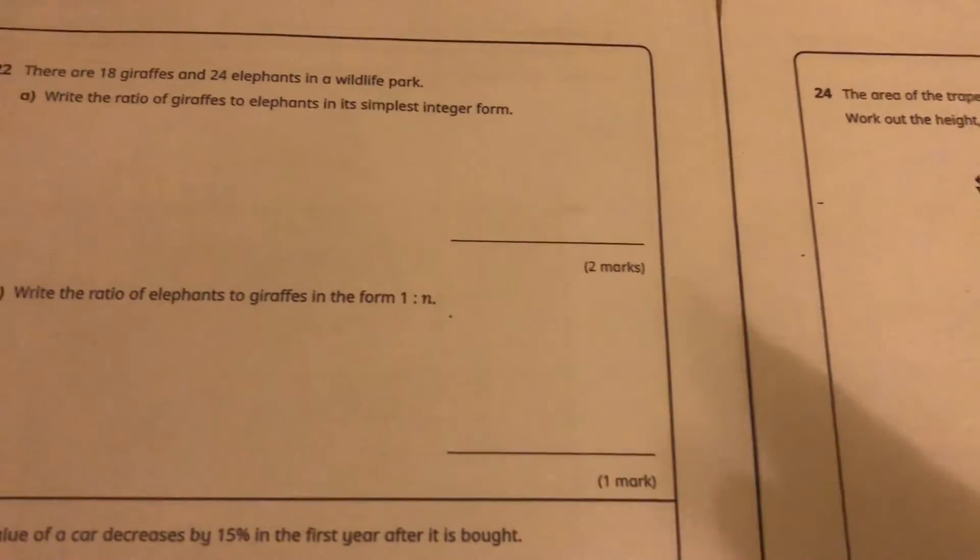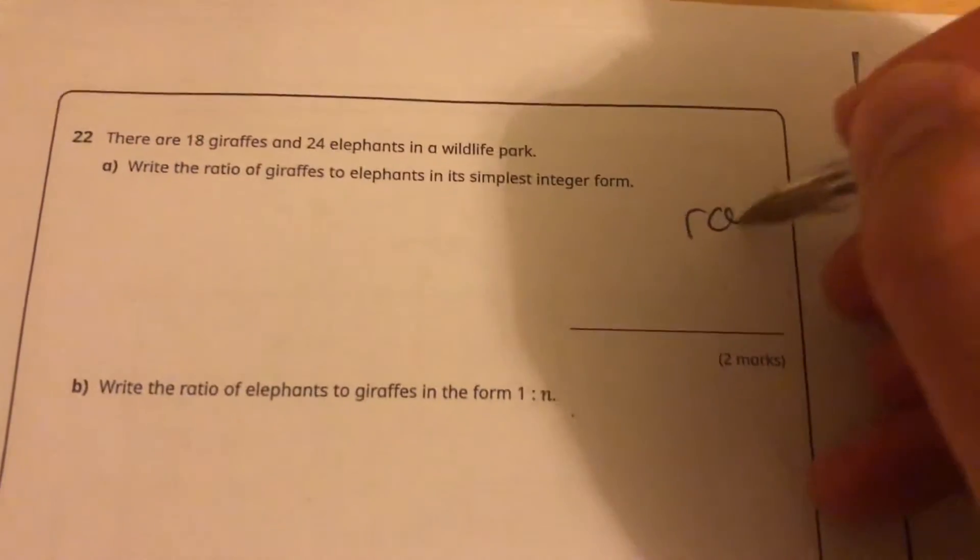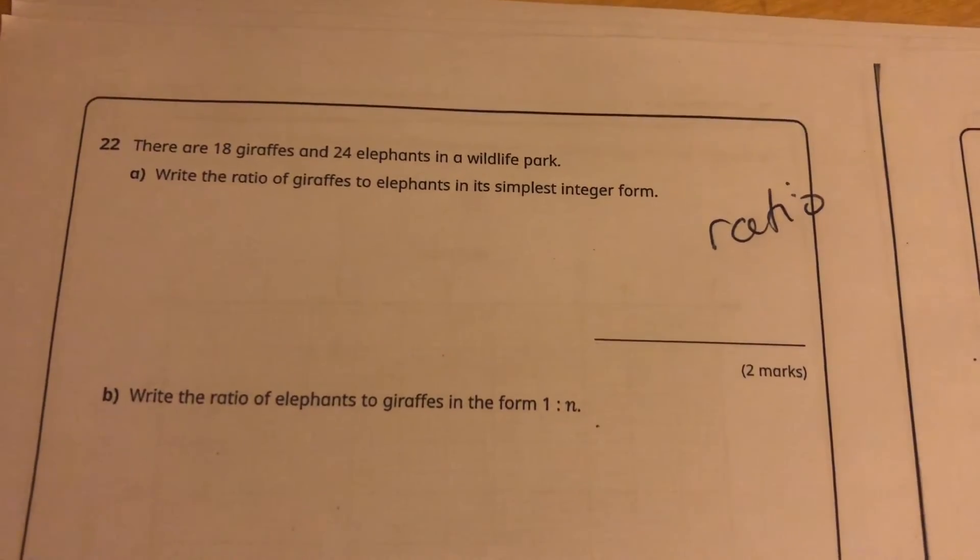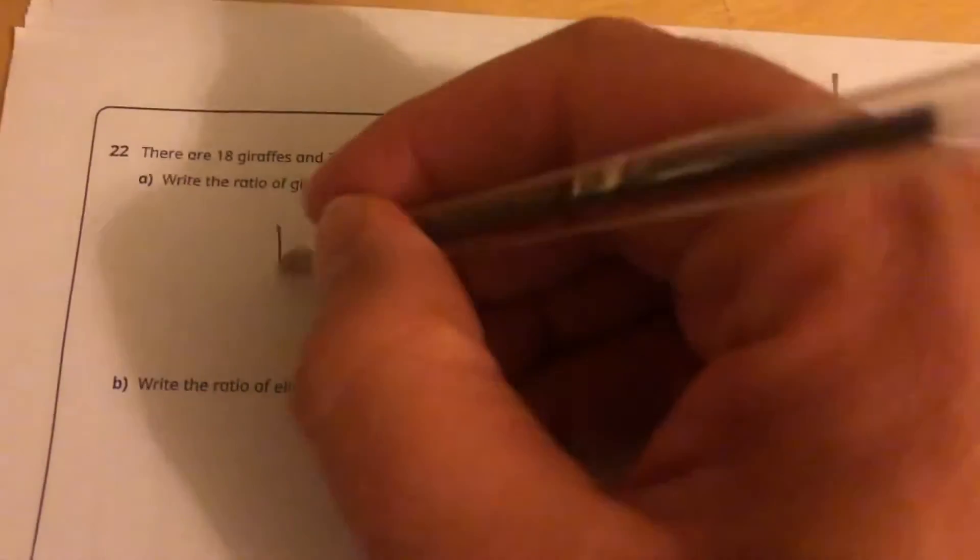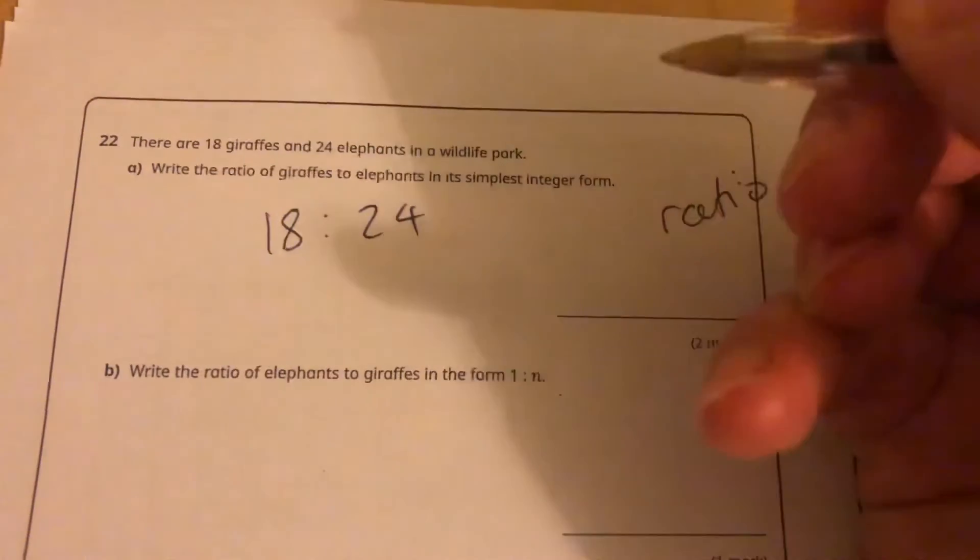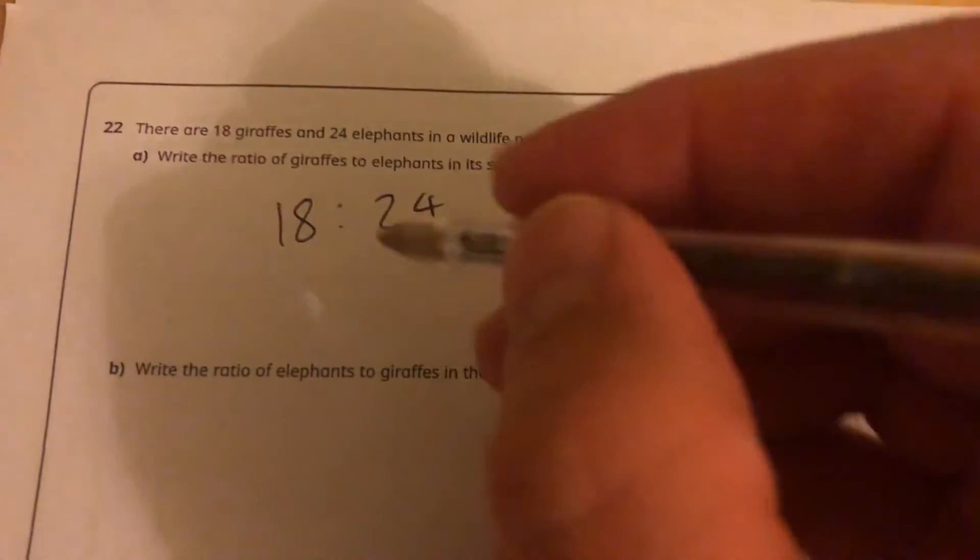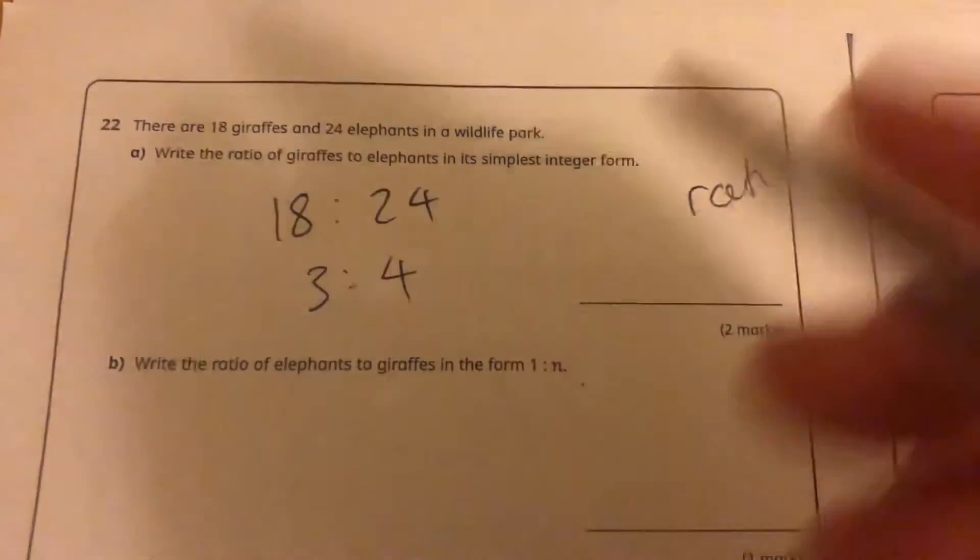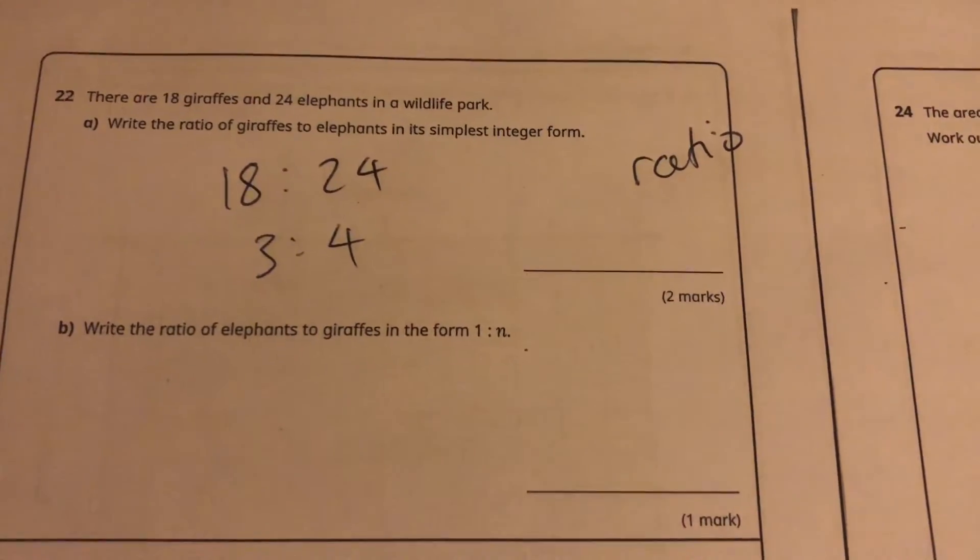I'm coming to the end of the paper. These questions are going to take a little bit more time, but I can do this one here on ratio. There are 18 giraffes and 24 elephants in a wildlife park. Write the ratio of giraffes to elephants in its simplest integer form. We'll start off with 18 to 24. Those are both multiples of six, so I can divide that by six and get three to four. If you can't see that, at least halve it - put it nine to 12 and then one more step.